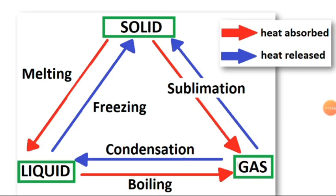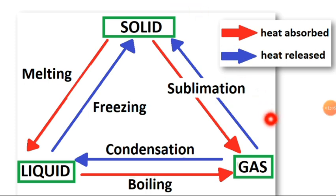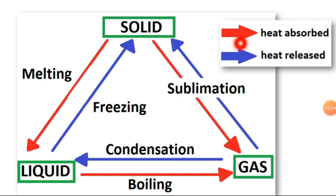So now we continue. The process for solid changing to liquid is called melting, and from liquid to solid is freezing. Solid changing to gas is sublimation, and gas to solid is also sublimation. Liquid changing to gas is called boiling, and gas changing to liquid is called condensation.